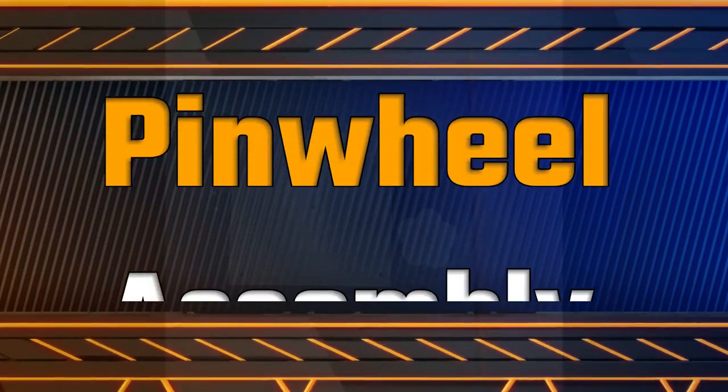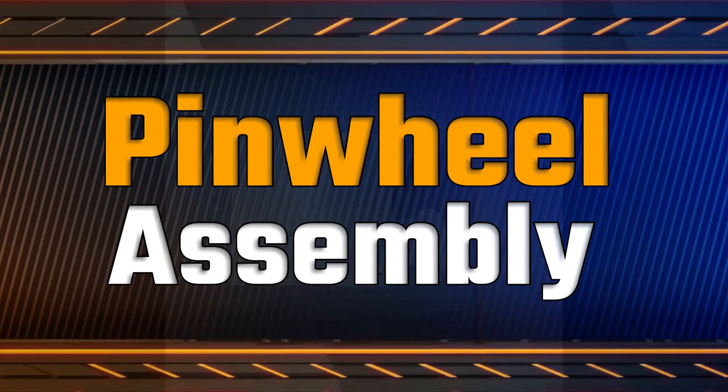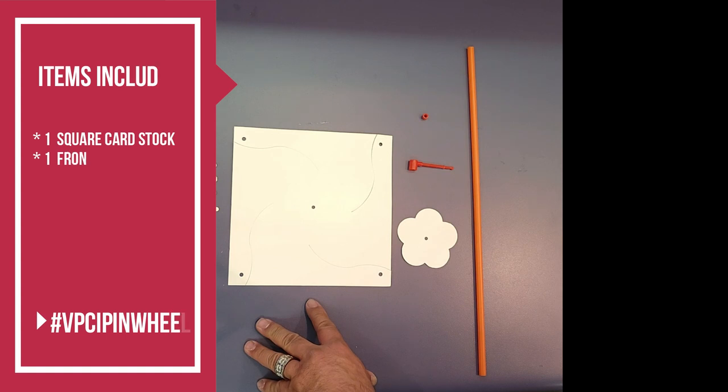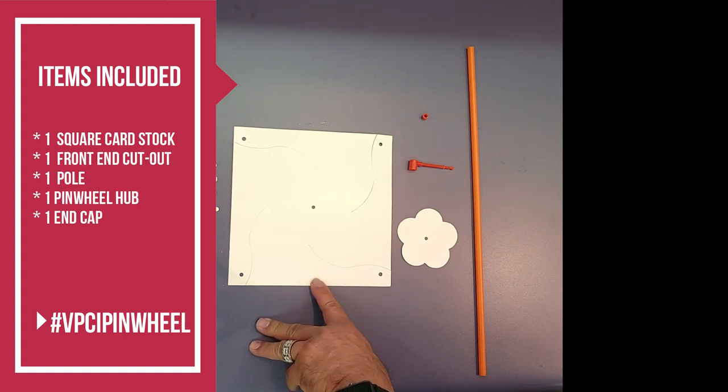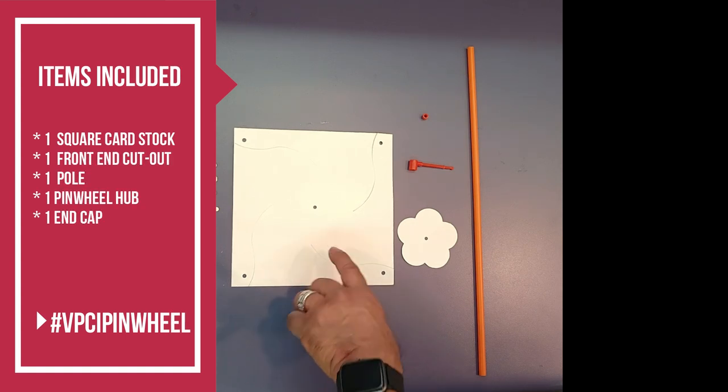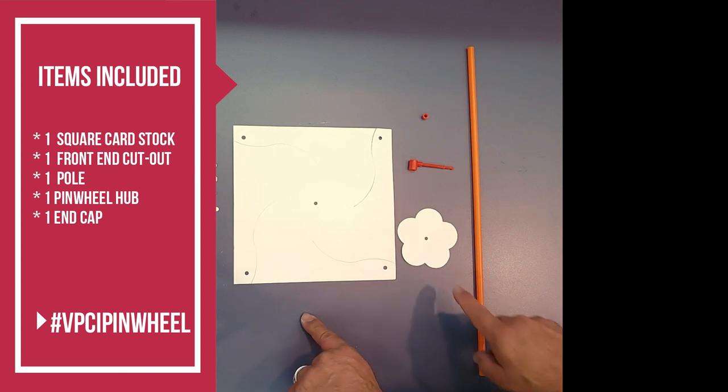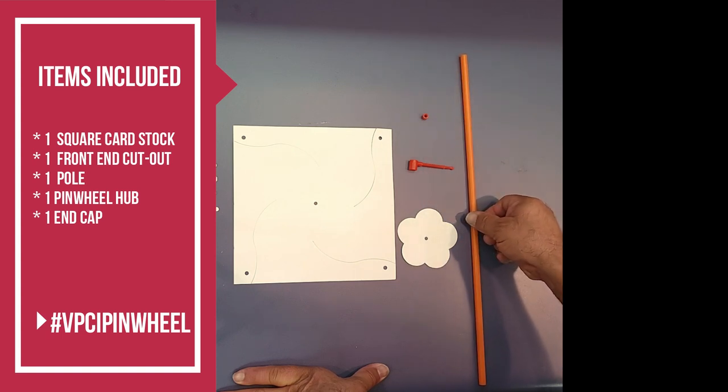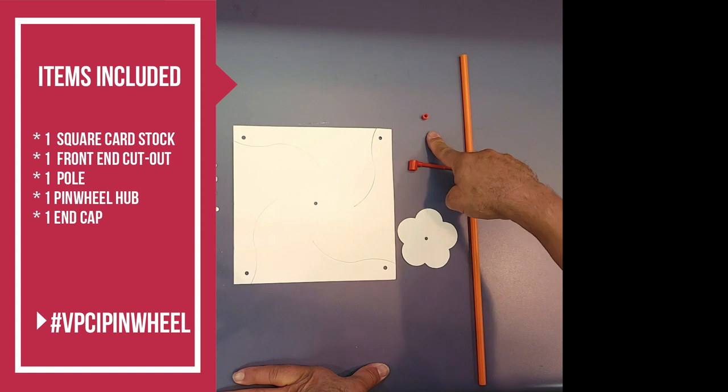Hi, this is a video for a demonstration on how to assemble a pinwheel kit. The items you will have that are included in the kit will be one square cardstock with four pedals, one front end cutout, one pole, a pinwheel hub, and an end cap.